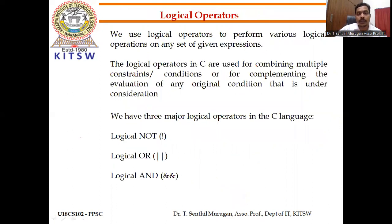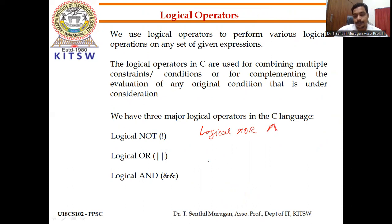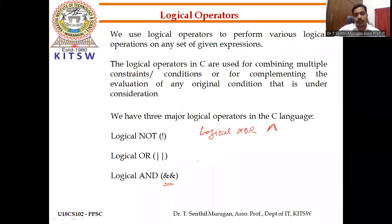Now we discuss logical operations. We perform logical AND, logical OR, and logical NOT — these are the basic operations. Logical XOR is also there, represented by the caret (^) symbol. We follow truth tables for these logical operations.